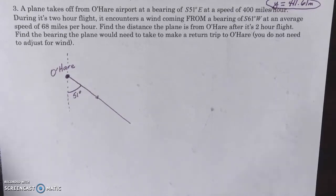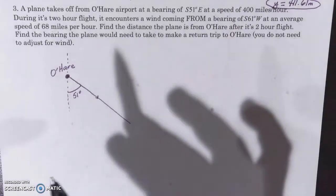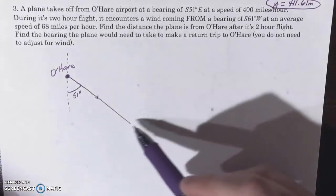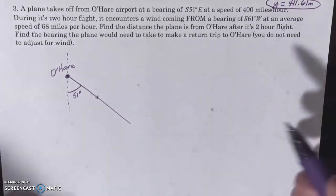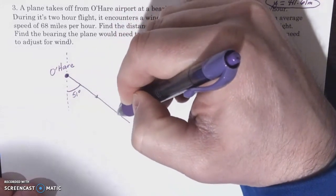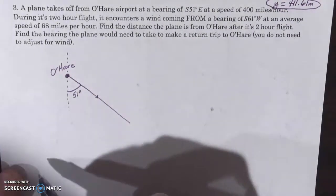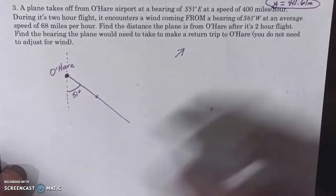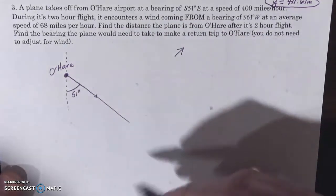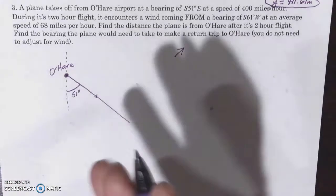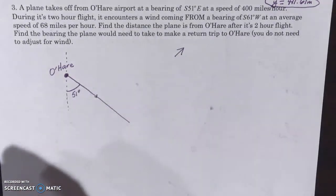Alright. So during its two-hour flight, it encounters a wind coming from a bearing of 61 degrees west of south at an average speed of 68 miles an hour. That's a big wind. Now, we understand that the wind is hitting this plane at the entire duration of its trip. But we don't need to worry about adjusting this until the end of its path. This would have been the path of the plane had there been no wind. Since there's wind coming from the southwest, pushing the plane in that direction, the true path of the plane, the true end of the plane after two hours, is not going to be here. It's actually going to be somewhere over here.